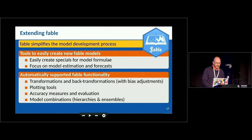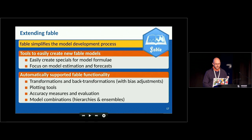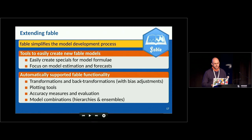FABL will automatically handle transformations and back-transformations of any type — square roots, cube roots, or even non-monotonic transformations like a sine transformation. Plotting tools will be there, and we'll be adding accuracy measures, evaluation tools, ensemble handling, and hierarchical forecasting support. The key structure that was discussed earlier is crucial for getting hierarchies to work properly, and is also important for plotting and other functionality.